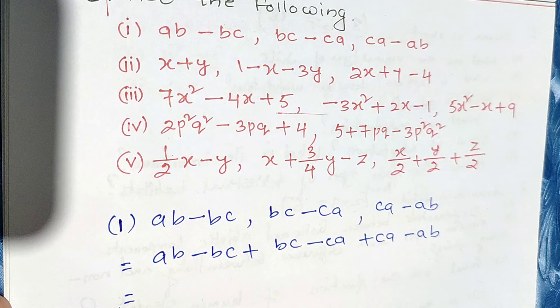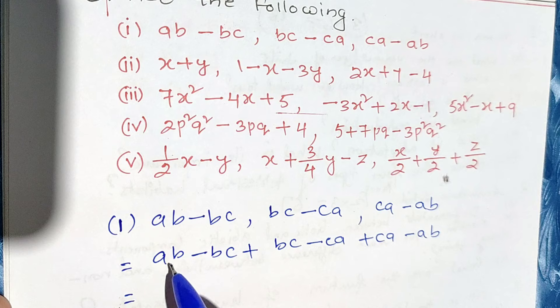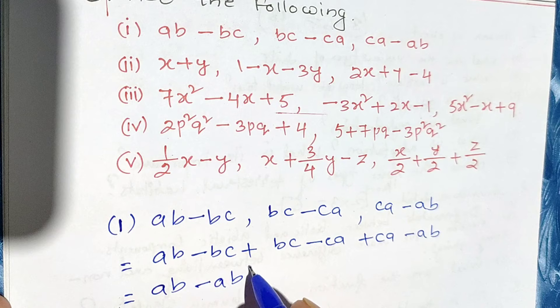Like terms means similar terms; we have to collect them together. So we need to bring together the like terms. ab and minus ab will be here together, so keep them under the bracket.